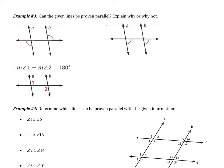Example 3: can the given lines be proven parallel, yes or no? Looking at the first picture, I need to first determine if I have any special angle pair. I notice that I have alternate exterior angles that are congruent.